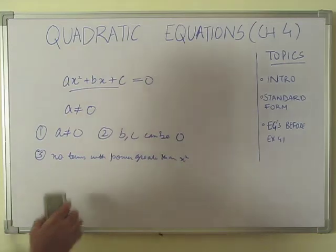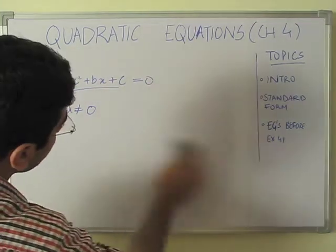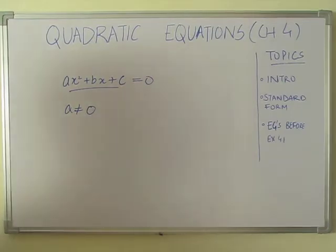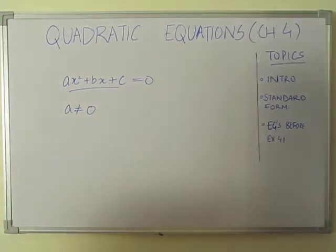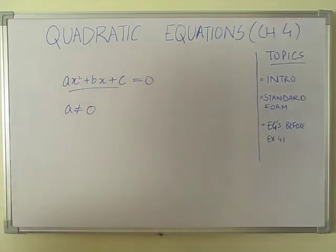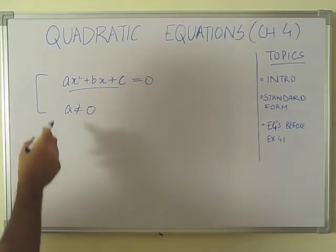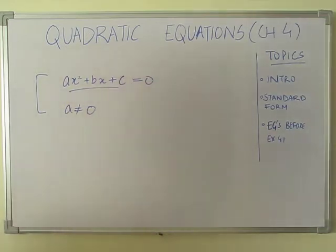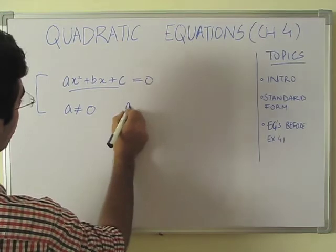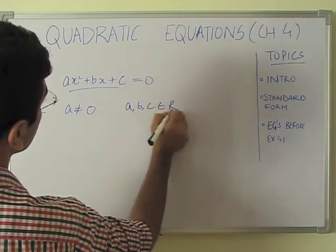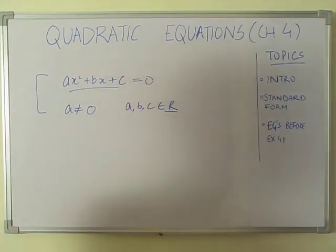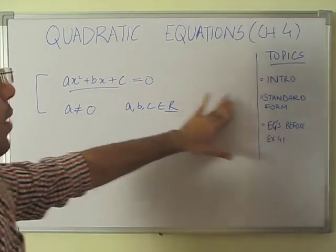Let's move on to the standard form. NCERT defines the quadratic equation as an equation of the form ax² plus bx plus c equal to 0, where a, b, c are real numbers and a should not be equal to 0. So the necessary conditions are: a ≠ 0 and a, b, c belong to real numbers. This is the standard form.